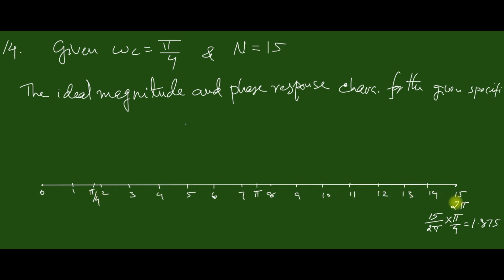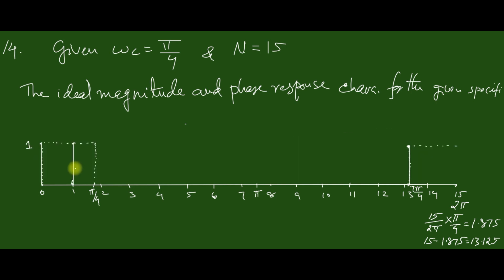The counterpart of pi/4 on the other side is obtained as 15 minus 1.875, equal to 13.125, which corresponds to 2pi minus pi/4, or 7pi/4. The ideal magnitude response has magnitude 1 in the passband up to pi/4.